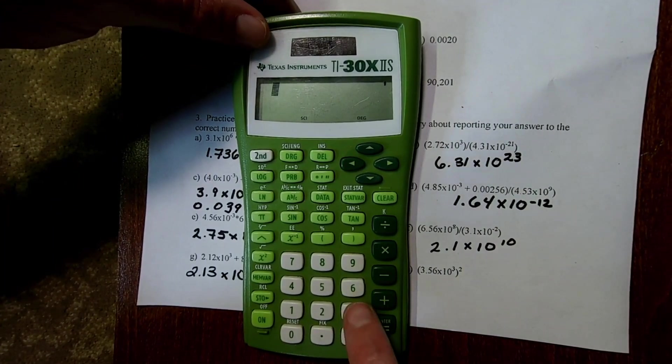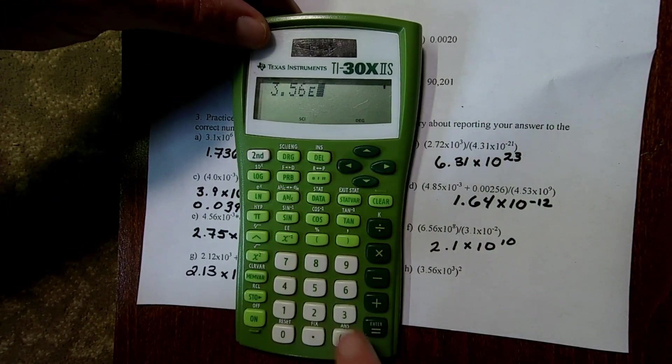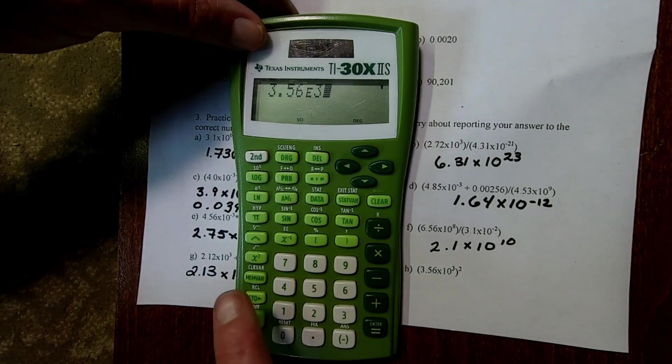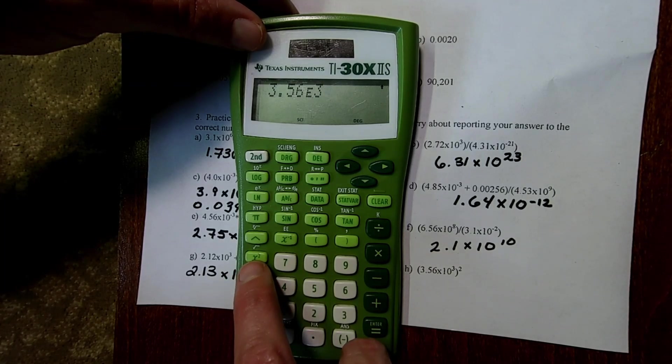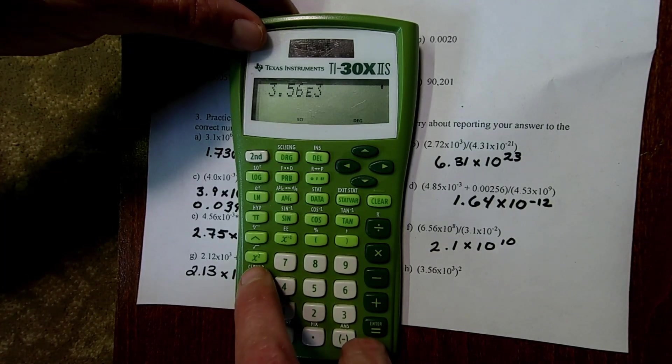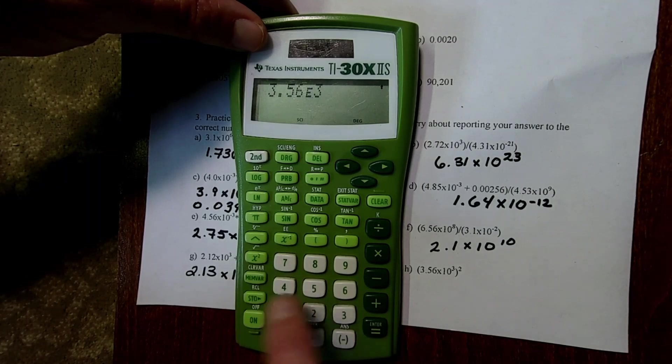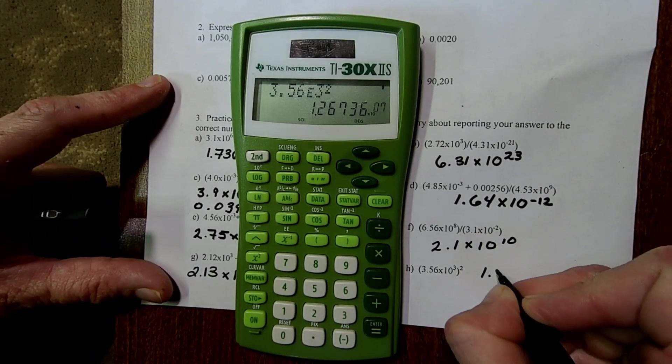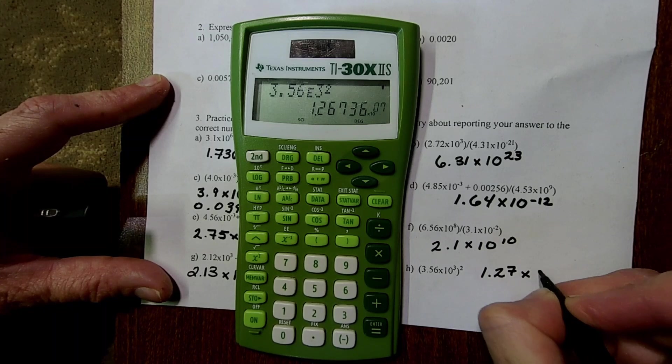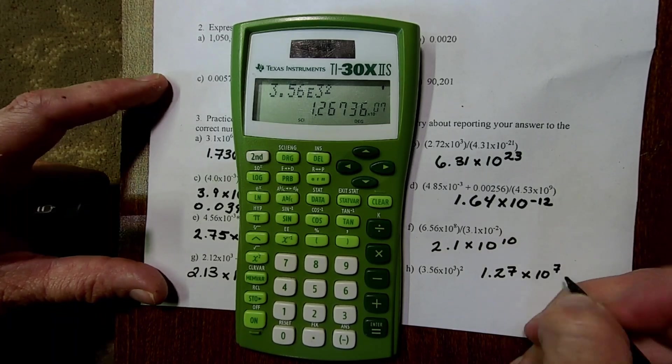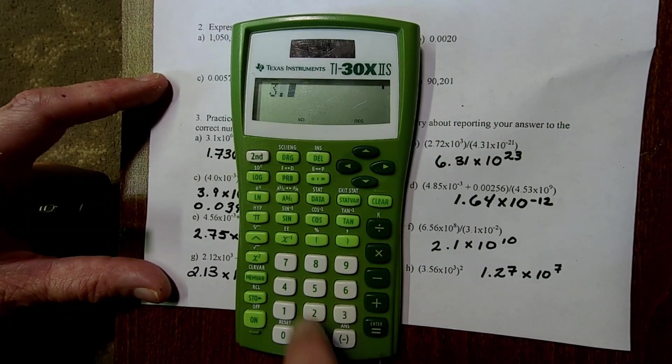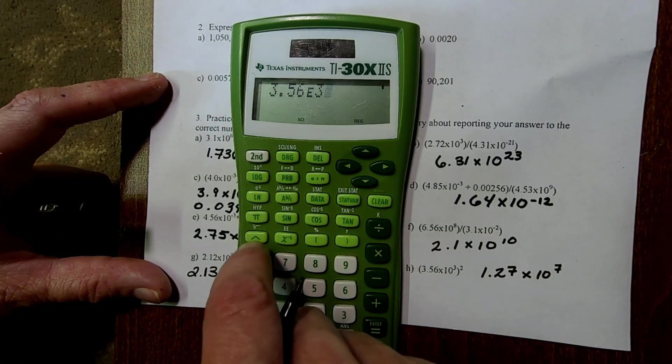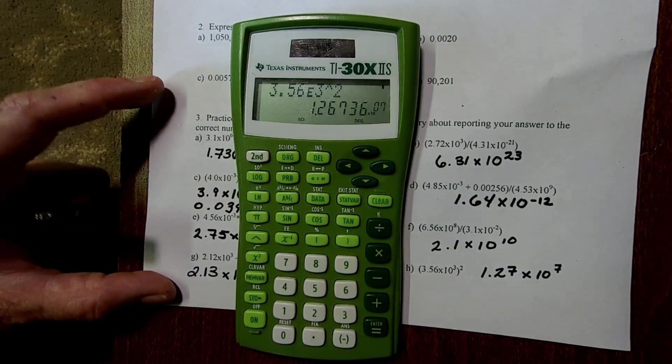Last one, we have 3.56 times 10 to the third. So, I use the E key. And, because I use the E key, I don't need the parentheses. There's two ways to do this. You can hit the squared button with this little x right here. And, we get 1.27 times 10 to the seventh. The other option, and it should give us the same answer, is to do caret. So, that little up mark squared. And, we get the same answer.